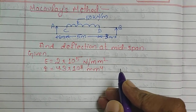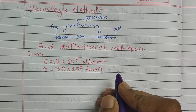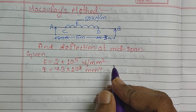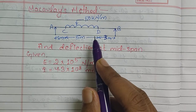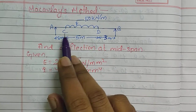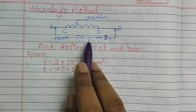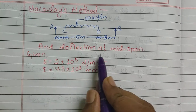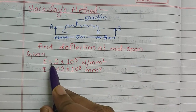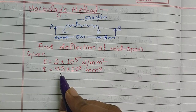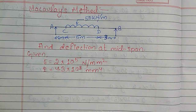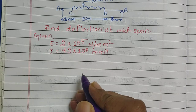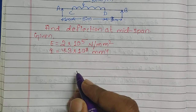Hello everyone, welcome to my YouTube channel Civil Learning. Today in this video I will be discussing the Macaulay's method — this is going to be the second type of question. In the previous video I discussed the Macaulay's method with a point load. In this question, a simply supported span AB of 9 meters is loaded with UDL and we are asked to find the deflection at the mid-span. We are given the value of E and I. Students, watch the video very carefully to get rid of any confusion.